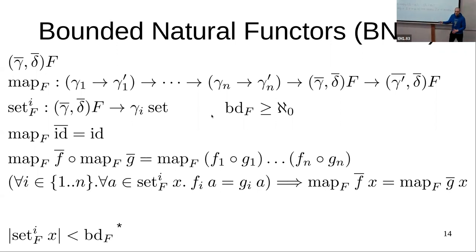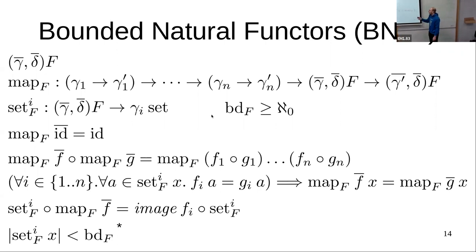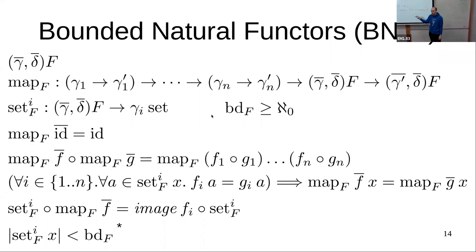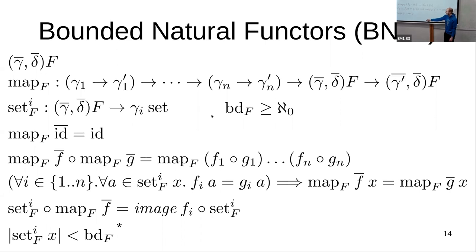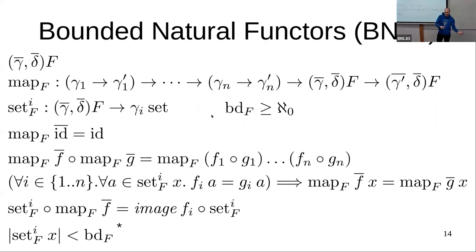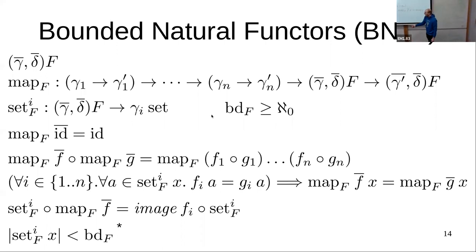The natural transformation to the power set means: if you map the whole data type and then extract all elements, that should be the same as extracting all elements first and then imaging the function over that set. The bounded part requires that all set functions are strictly bounded by our cardinal bound.